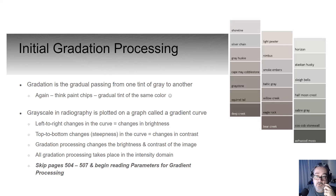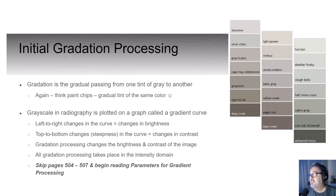Let's move on to initial gradation processing. Gradation is the gradual passing from one shade of gray to another — some textbooks call this gradient processing. Think of the paint chip example: you can see a natural gradation with the bottom being darkest, and as you go higher in each column they get lighter and lighter. It's the same type of gradation you see when your radiograph is processed.